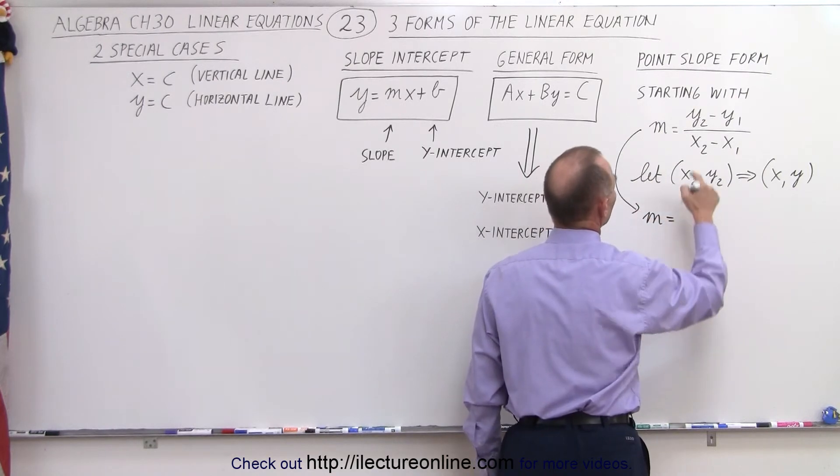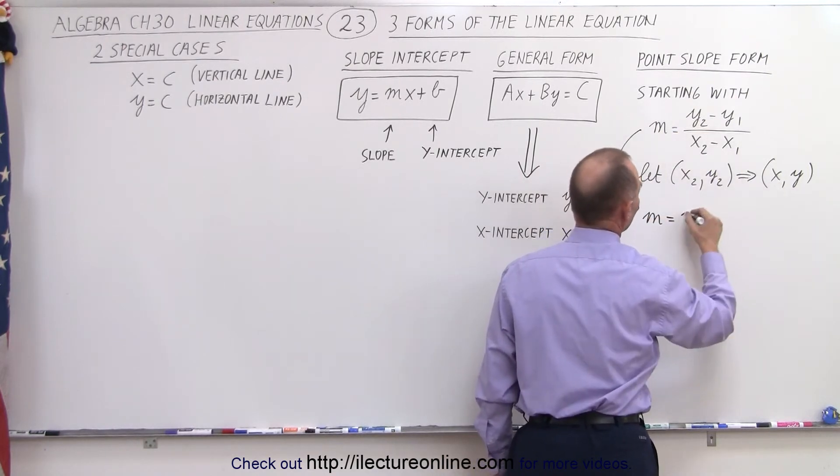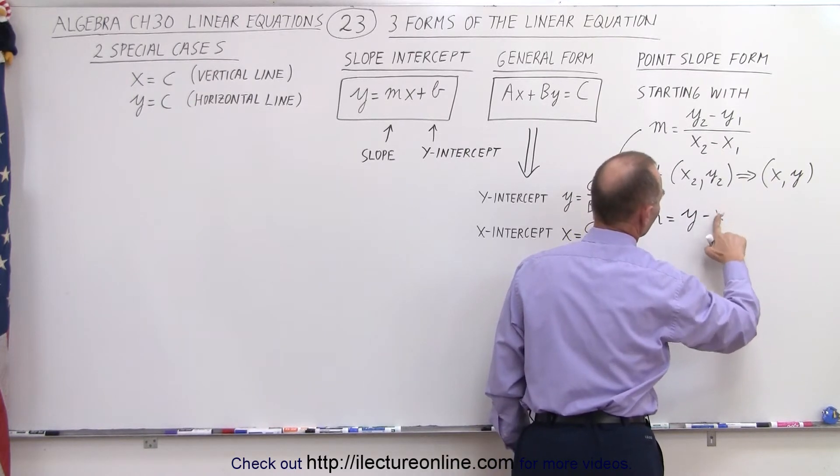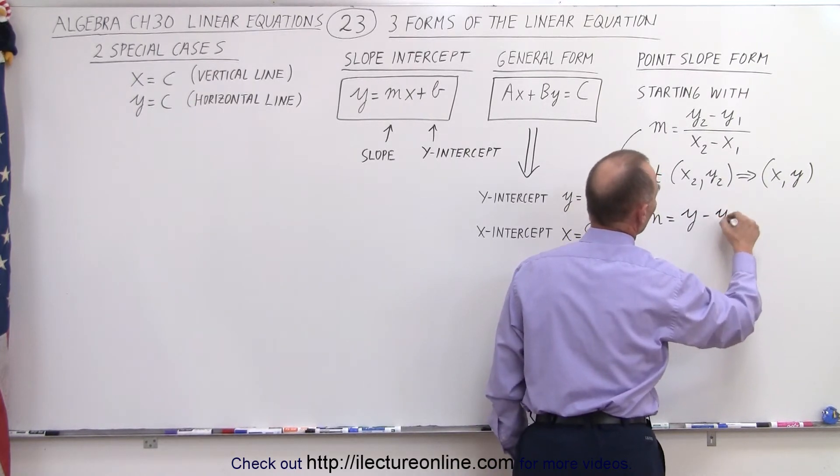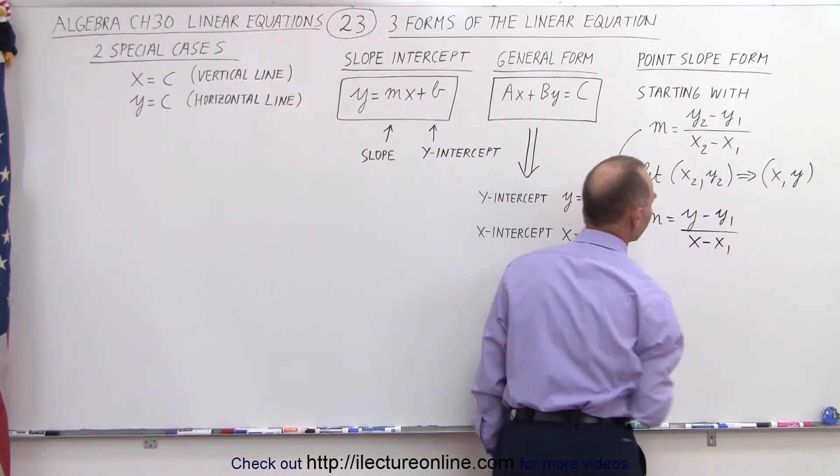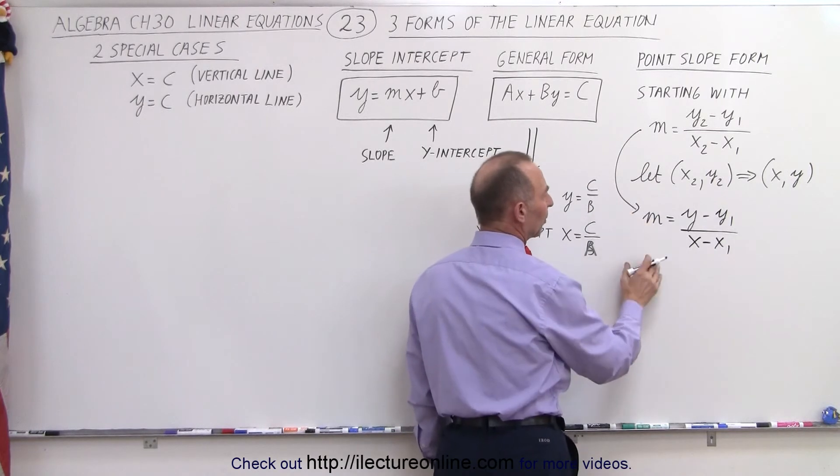So now we have m is equal to, instead of y2, we simply write y minus y1, divided by instead of x2, we write x. So we have x minus x1. And then we cross multiply.